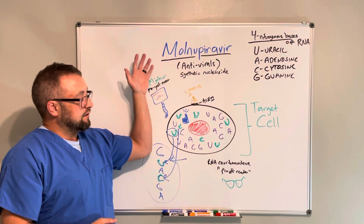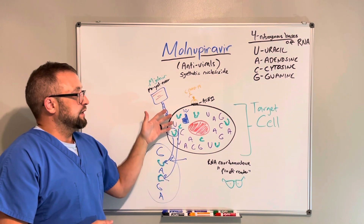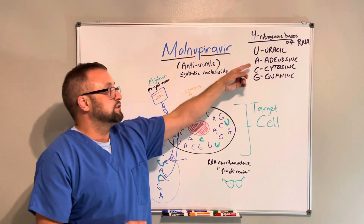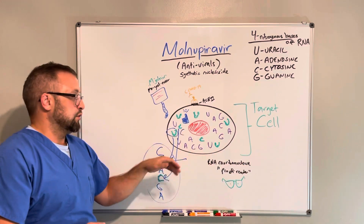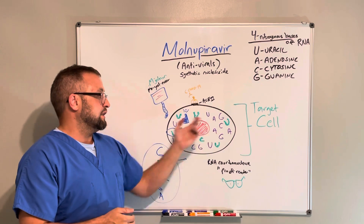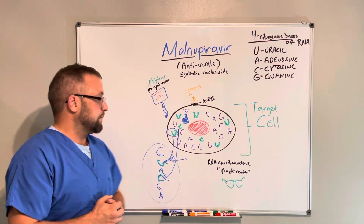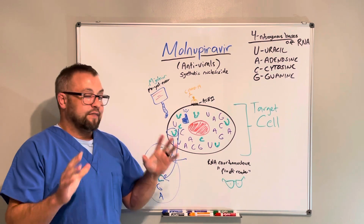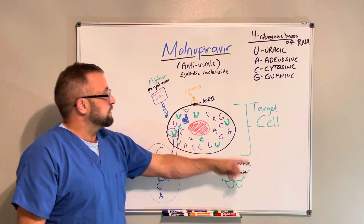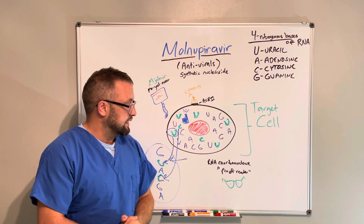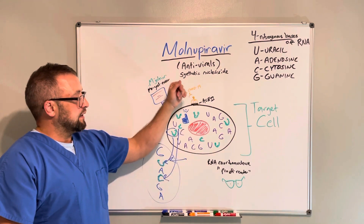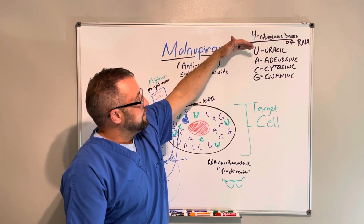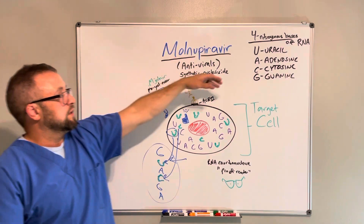So not only do these antivirals have to trick the machinery and construction workers inside the cell into putting them together thinking they're using nitrogenous bases, they also have to get past this proofreader. That's why these drugs can be difficult to develop — the proofreader may see them as foreign and terminate them. According to current research, molnupiravir does a better job of evading the proofreader than remdesivir did, and it also mimics both uracil and cytosine, whereas remdesivir only mimics one.